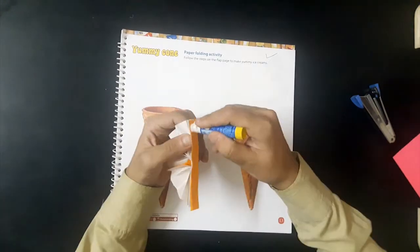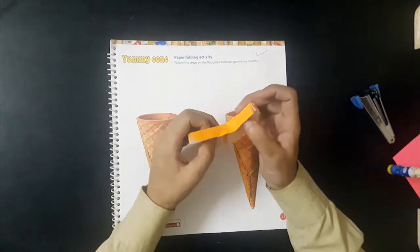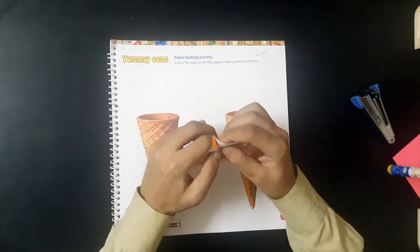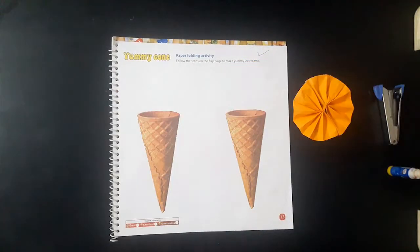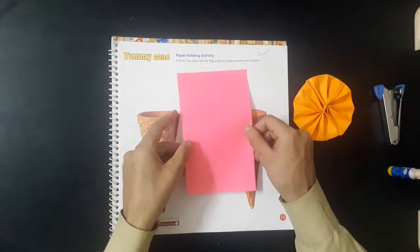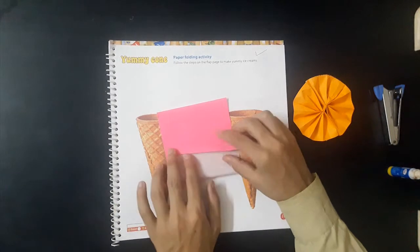Glue the other side to complete a circular shape. Now take pink color paper and fold it into another concertina.